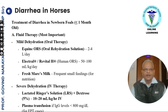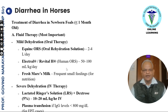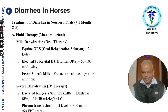For diarrhea in horses — treatment of diarrhea in newborn foals less than one month old: fluid therapy using equine oral rehydration solution 2 to 4 liters per day, or IV fluids 50 to 100 ml per kg per day. Provide fresh mare's milk with frequent small feedings. In severe dehydration, use lactated Ringer's solution plus dextrose 10 to 20 ml per kg per hour intravenously. Plasma transfusion if IgG levels are below 800 mg per deciliter.